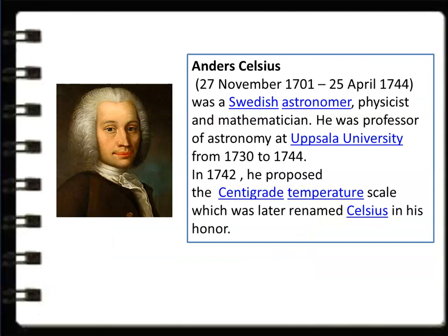Anders Celsius (27 November 1701 – 25 April 1744) was a Swedish astronomer, physicist, and mathematician. He was a professor of astronomy at Uppsala University from 1730 to 1744. In 1742, he proposed the centigrade temperature scale, named Celsius in his honor.